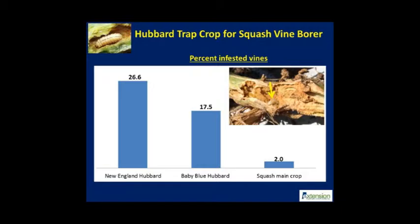Only 2% of yellow squash vines were infested with vine borers, which resulted in plenty of high-quality produce without the use of insecticides on the main crop.